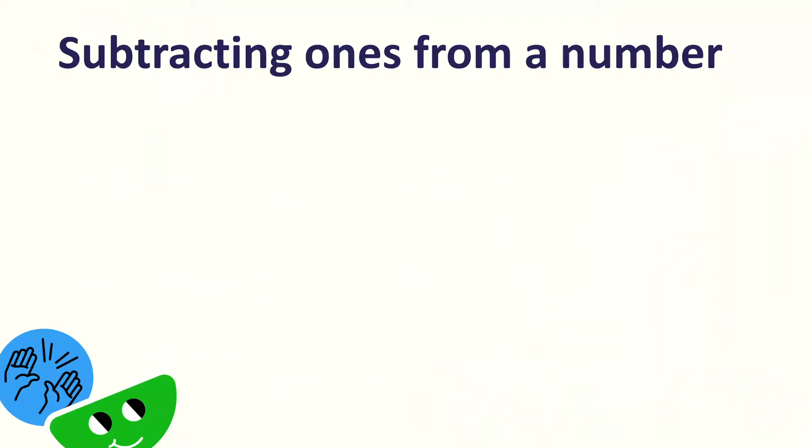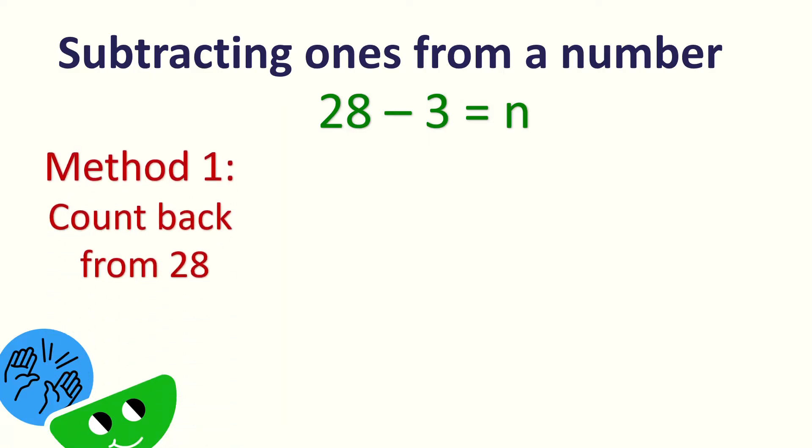Subtracting ones from a number. Let's say we have 28 minus 3. We can answer this using this method — we count back from 28. We will count back 3 times.